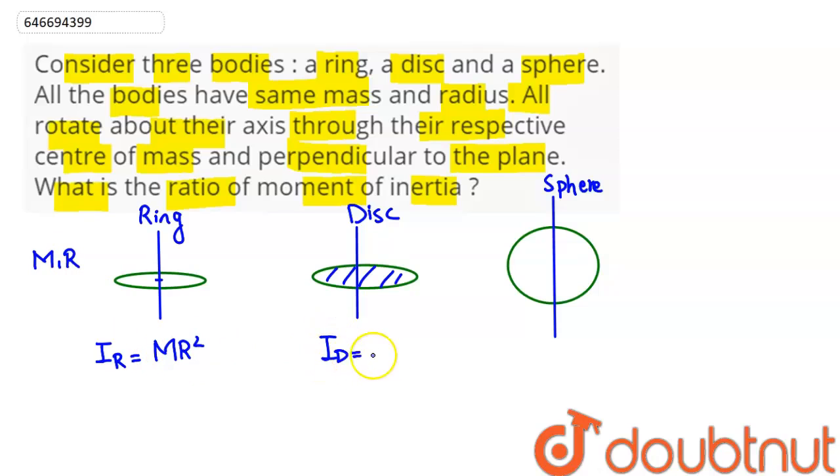For the disc, moment of inertia comes out to be MR²/2. And for the solid sphere, moment of inertia comes out to be 2/5 MR².